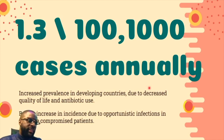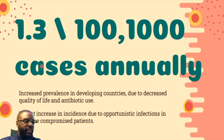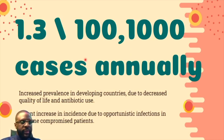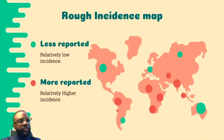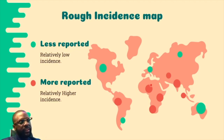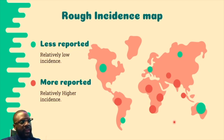The incidence of brain abscess is 1.3 per 400,000, based on CDC data — so it is reported as quite rare in American numbers. However, living in Kenya, there is increased prevalence in developing countries due to decreased quality of life and antibiotic use. There has also been a recent increase due to opportunistic infections in immunocompromised patients. An incidence map shows that cases cluster around the equatorial belt — hot spots include India, Nigeria, Kenya, and South Africa.